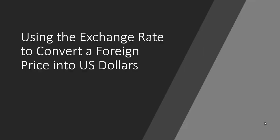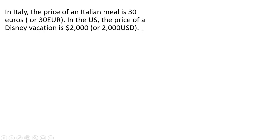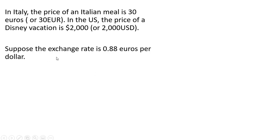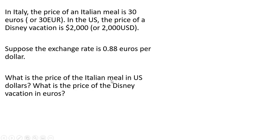Hello. In this video we're going to use the exchange rate to convert a foreign price into US dollars and then vice versa. In Italy, the price of an Italian meal is 30 euros. In the US, the price of a Disney vacation is 2,000 US dollars. Suppose the exchange rate is 0.88 euros per dollar. What is the price of the Italian meal in US dollars, and what is the price of the Disney vacation in euros?